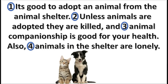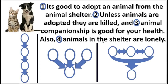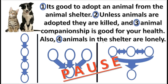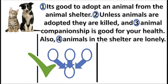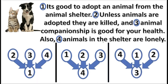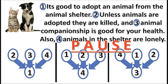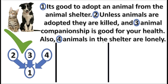Here is a final practice problem. Begin by choosing the correct pattern for this argument. Press pause. That is correct — three premises support a conclusion independently. Next, choose the correct sequence of numbers in the argument. Press pause. That is correct: 2, 3, and 4 support 1 independently.